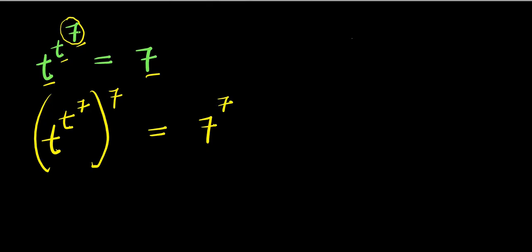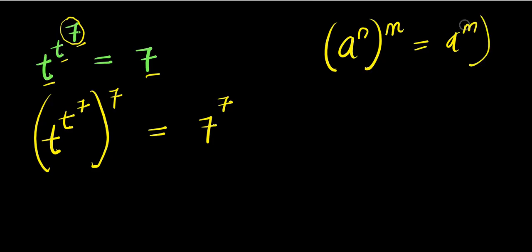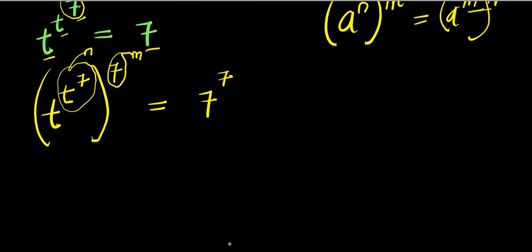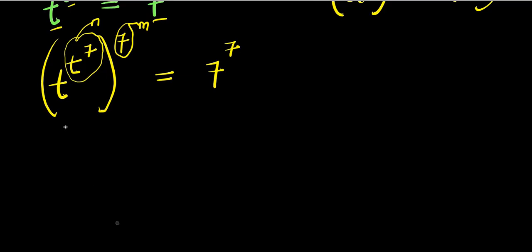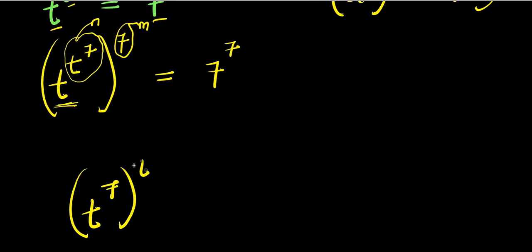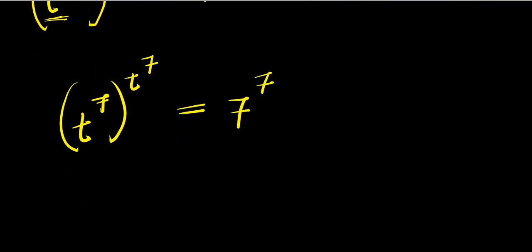Now I can consider this identity: a to the power of n, raised to the power of m, equals a to the power of m raised to the power of n. The t^7 here will represent my n, and the outer seven will represent my m. Switching the powers, m comes inside the bracket while n goes outside. So we get t^7 to the power of t^7, which equals seven to the power of seven.